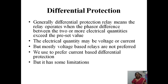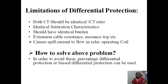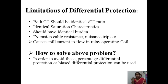Protection based on the circulating current principle — that is, current-based differential protection — has certain limitations. In differential protection, we require two identical CTs: their CT ratios must be matched, their saturation characteristics must be equal, and they must have equal burden. But in practice, this is not possible. No two CTs are identical. Because of this, it causes spill current to flow in the relay operating coil. Also, external cable resistance causes relay maltrip or nuisance trip.